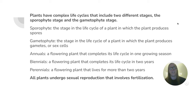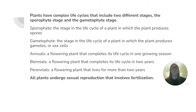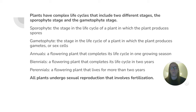Lesson four: plants have complex life cycles that include two different stages — the sporophyte stage and the gametophyte stage. Sporophyte is the stage in the life cycle of a plant in which the plant produces spores. Gametophyte is the stage in which the plant produces gametes, or sex cells. Annuals are flowering plants that complete their life cycle in one growing season. Biennials complete their life cycle in two years. And perennials are flowering plants that live for more than two years.